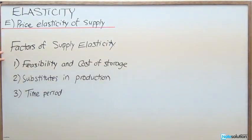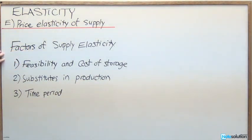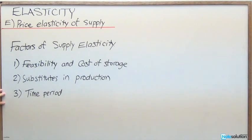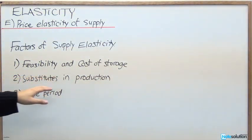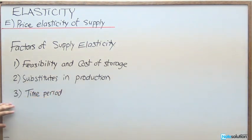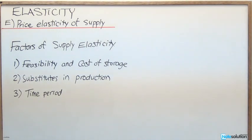Before we get started with the technical details, we're going to skip ahead to price elasticity of supply, just to talk about what are those factors that can affect supply elasticity. Here we're going to see that there are three general categories: the feasibility and cost of storage, substitutes in production, and finally time period — much the same as we saw with the factors of demand elasticity.